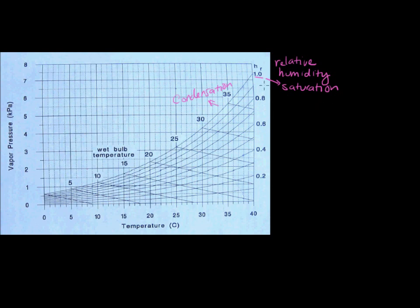So relative humidity are just these curves. This is 100% relative humidity, this is 90%, that's 80%, 70%, 60%, and 50%. At these curves, 50% is just halfway between saturation and zero. And you notice - why do these curve?